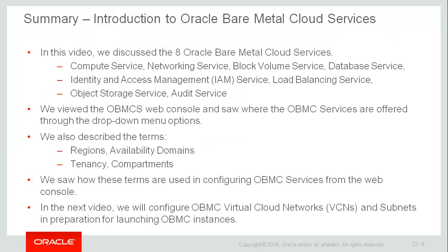To summarize, in this video we discussed the eight main bare metal cloud services. We looked at the cloud service console and saw where these services are offered through the drop-down menus on the top right corner of the console. We also described regions, availability domains, tenancy, and compartments, and saw how these terms are used in configuring bare metal cloud services from the web console. In the next video, we'll configure virtual cloud networks and subnets in preparation for launching Oracle Bare Metal Cloud instances.